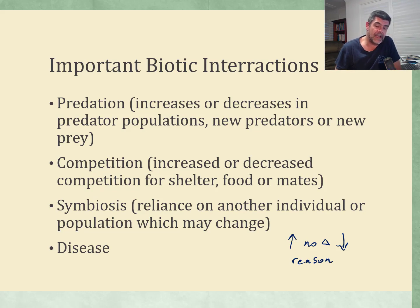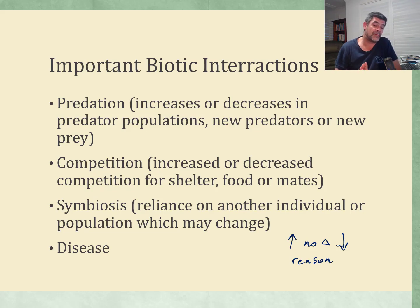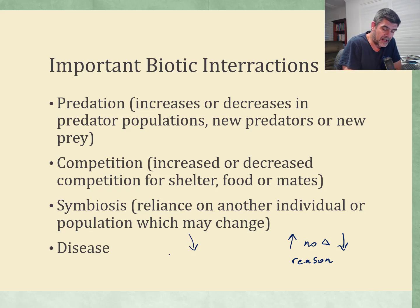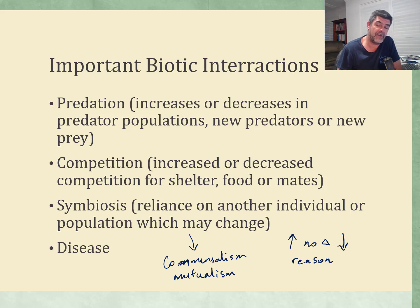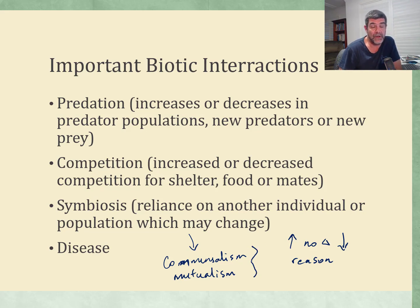Symbiosis is another very important biotic interaction in ecosystems. Symbiosis is the reliance on another individual or population. Usually what we're talking about here are things like commensalism or mutualism — where there is a benefit to both organisms involved in a relationship, or at least one of them without the other being harmed in any way. If those relationships change, or if new relationships form, they can also have an impact on population density.